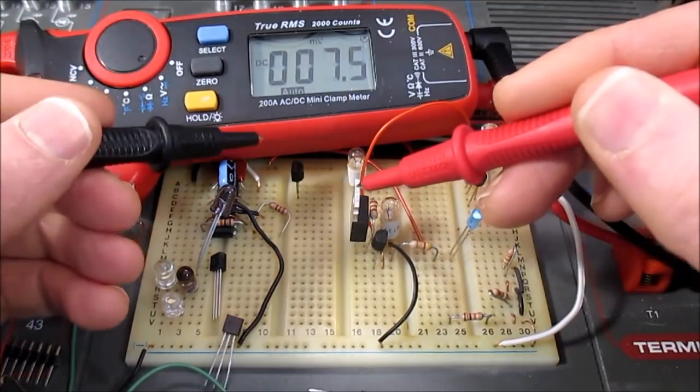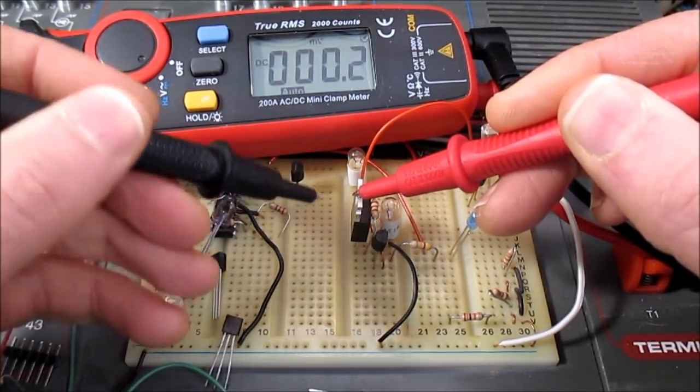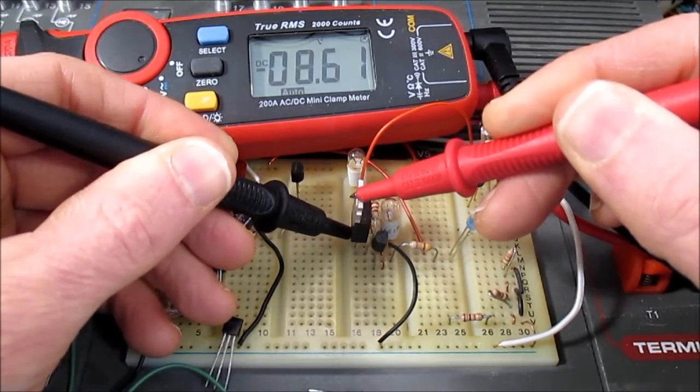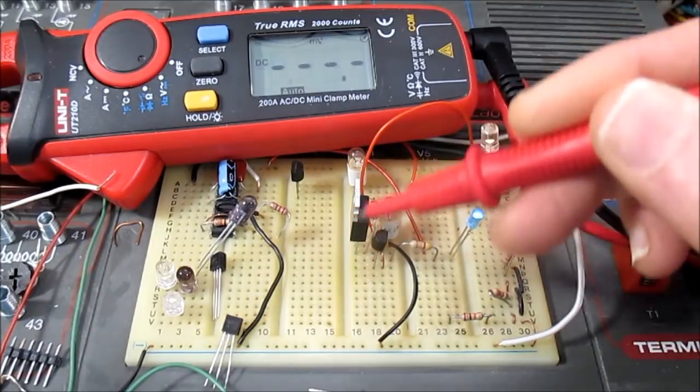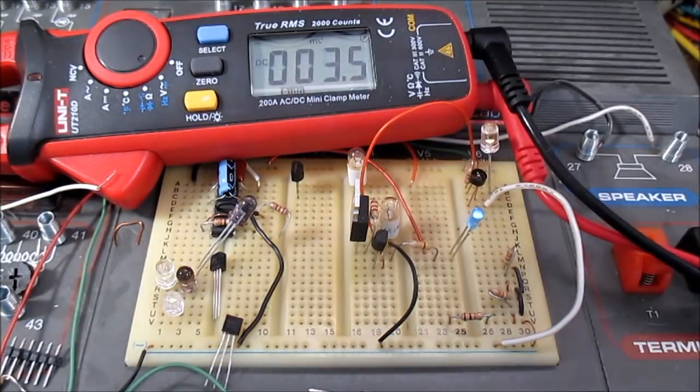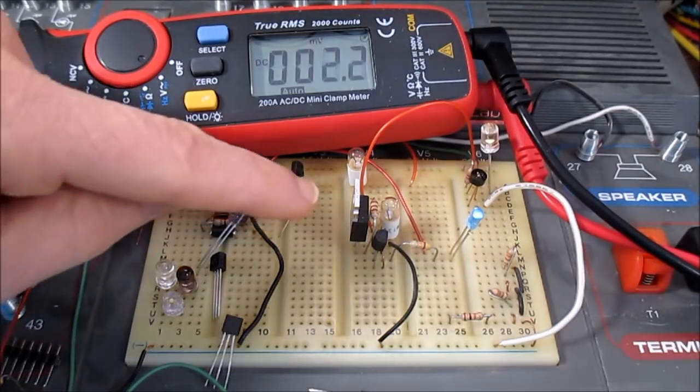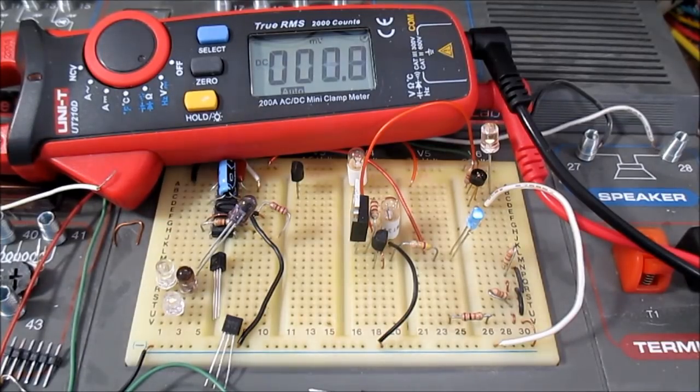But is Q2 turned on? Let's see here. I'll go from base to emitter. And look at that. I have full battery voltage. So this is not conducting. It's not turned on at all. You can measure the current if you want, but you know, that junction only has 247 millivolts. So Q2 is definitely not conducting.